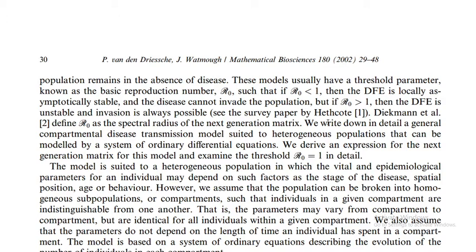These models usually have a threshold parameter known as the basic reproduction number R₀. All such models have a threshold parameter. If R₀ is less than one, then the disease-free equilibrium is locally asymptotically stable — meaning that if initial values are taken within a particular domain, the solution approaches the DFE point, and the disease cannot invade the population.